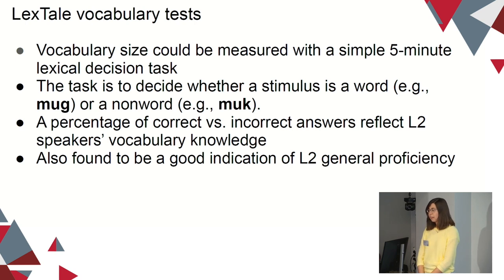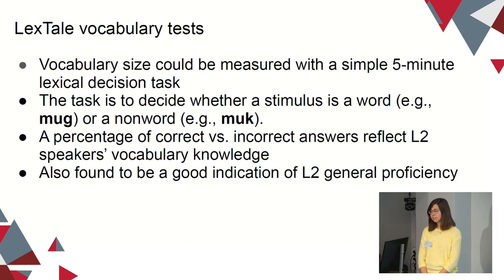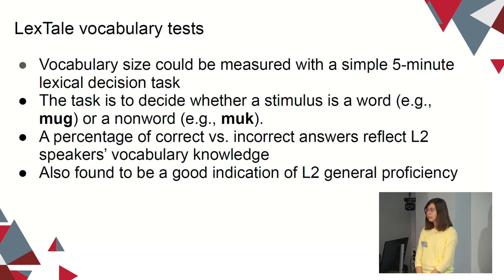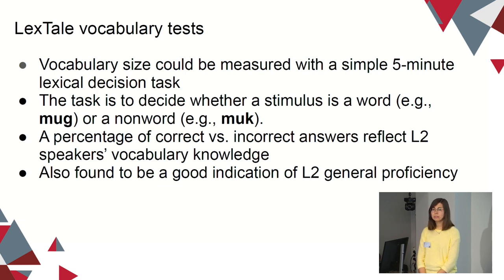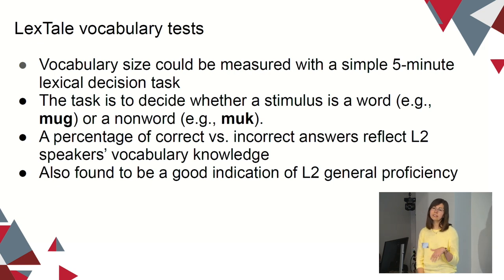Legstail is a quite good example of this kind of test. It's widely used, really easy to do, and takes only five minutes. It's a lexical decision task — participants see a word on the screen and have to decide whether it's a word or non-word. When they complete the task, they immediately get feedback showing the number of correct and incorrect answers. Legstail is widely used in studies, and research has shown that vocabulary knowledge is a really good indicator of general language knowledge, so testing one area gives us a wider overview of general language ability.